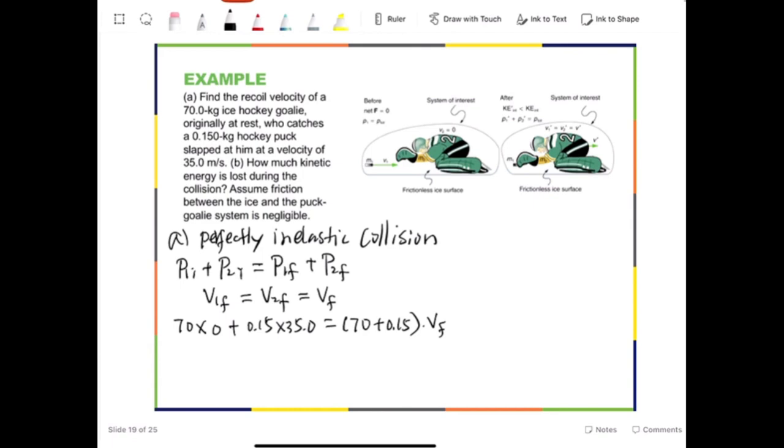This can be solved easily, because VF is going to be 0.15 times 35.0 divided by 70.15, and the answer is 0.0748 m per second. You can see the velocity of the goalie after collision is very, very slow, nearly not moving.